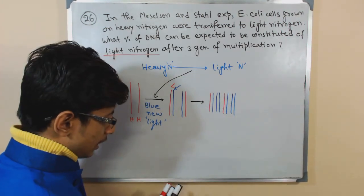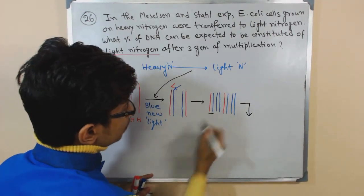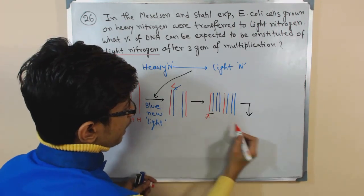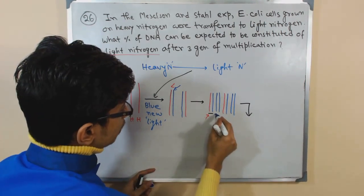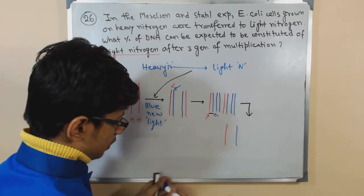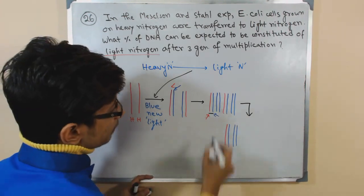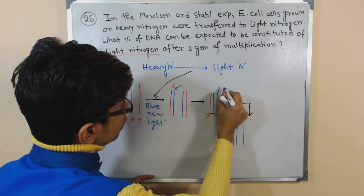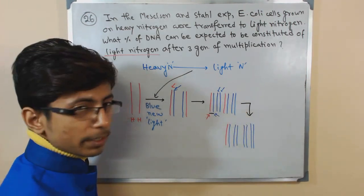After that, the third generation, what happens? We took this one. So this red one is the parent, blue one is another parent and then new strands will be added which are also blue. Similarly, in this case, this blue strand here goes to another parent, they are taken as a template and new strands are made.